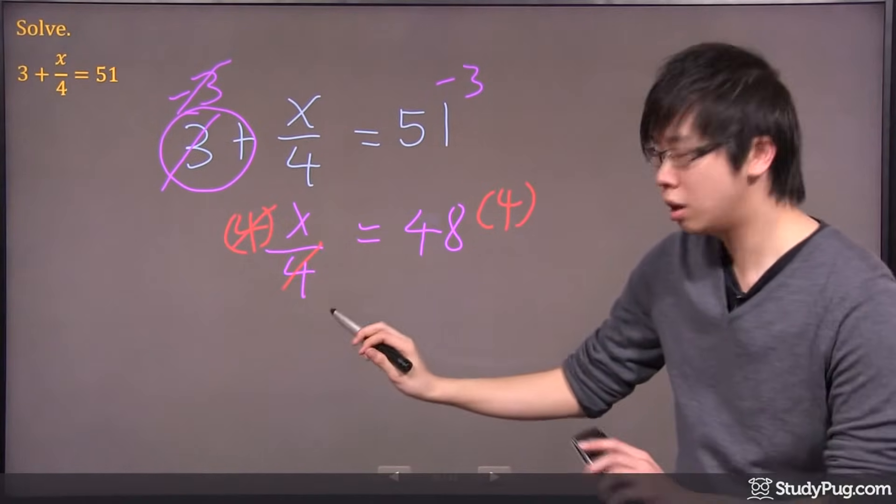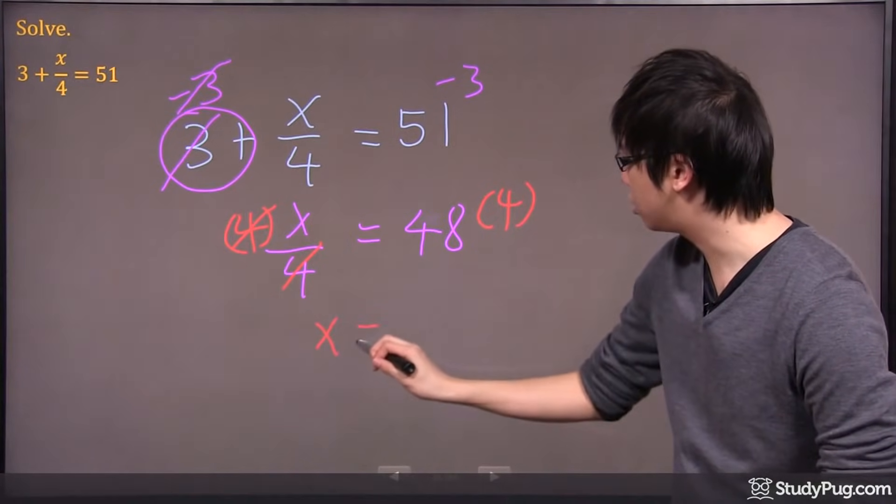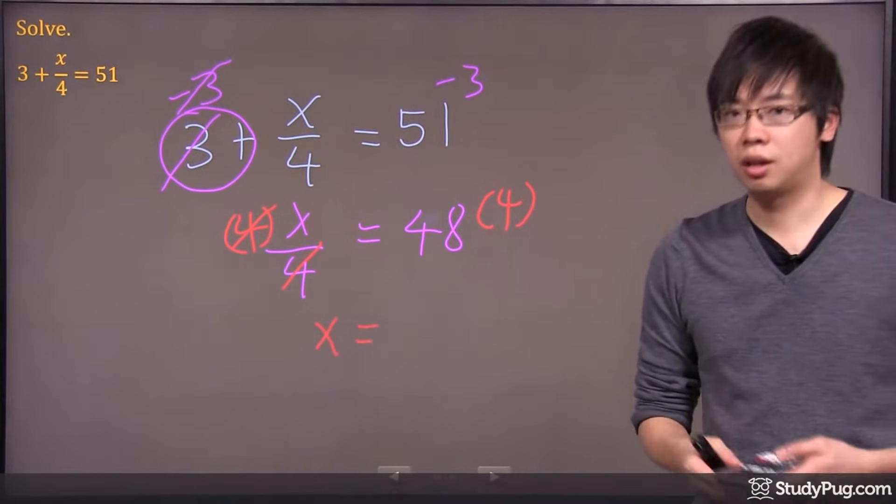So what happens, the 4 here is cancelled, and you're left with just x, and it's equal to 48 times 4.